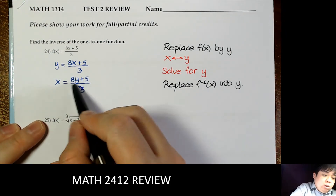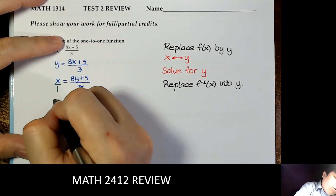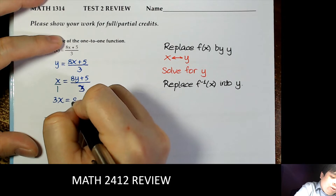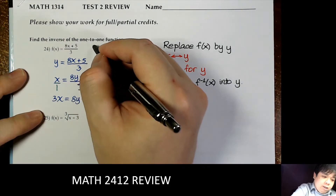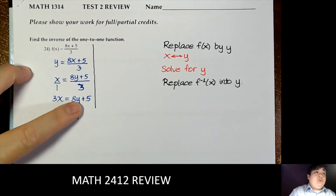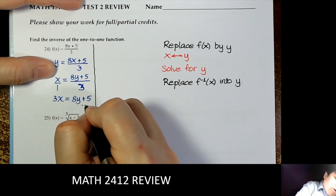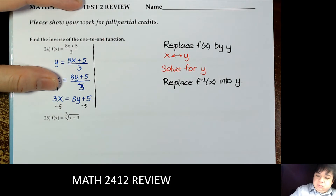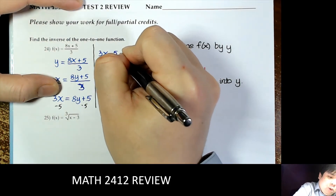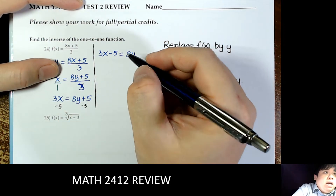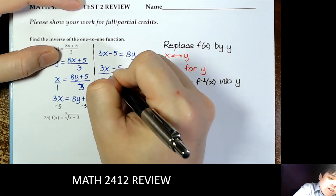Now we have a rational fraction. We can write this over 1 and cross multiply, so we have 3x equal to 8y plus 5. Now just solve for y — subtract 5 on both sides to get 3x minus 5 equal to 8y, then divide by 8 on both sides to get 3x minus 5 over 8 equal to y.